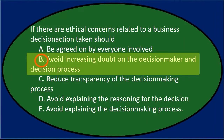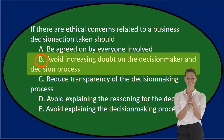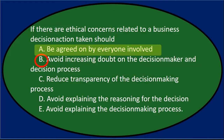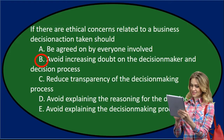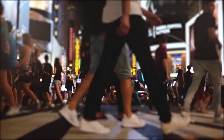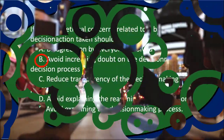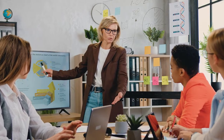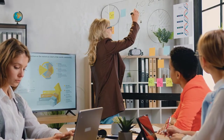If there are going to be ethical concerns, we want to reassure the process and make sure it's going well — we want to avoid increasing doubt on the decision maker and process. A — be agreed on by everyone — might be desirable, but it's not necessarily going to happen that we'll have total agreement. The fact that we don't have total agreement doesn't necessarily mean something is wrong. C — reduce transparency — is typically not a good idea; we increase confidence by increasing transparency.